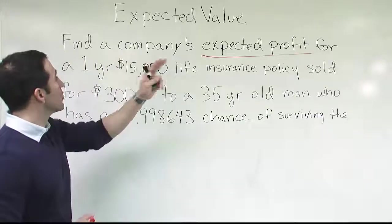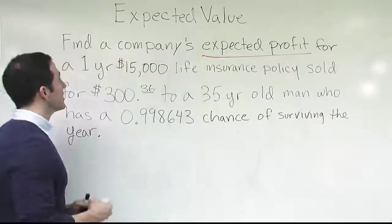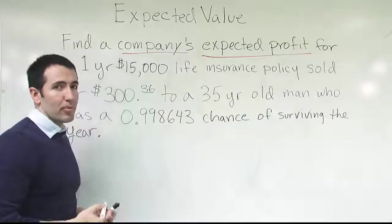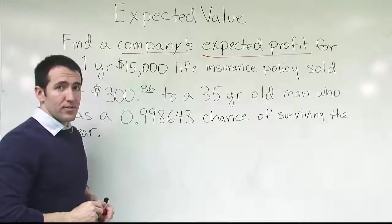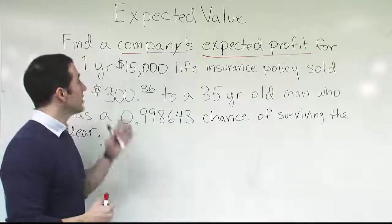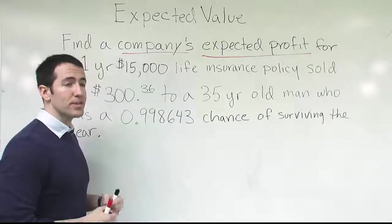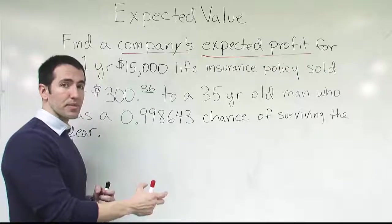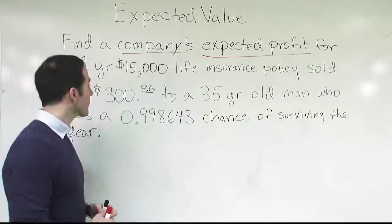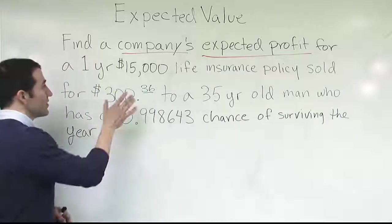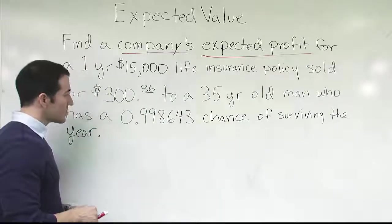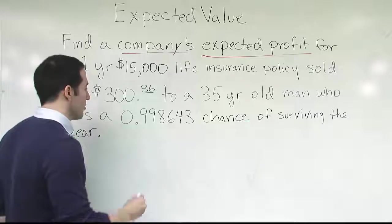So find a company's expected profit. We want to pay attention to the fact that they say the company's — there's always going to be a point of view on the problem. Sometimes it doesn't matter, but here we're going from the company's point of view. So we're going to make sure we're aware of what represents a loss for them and what represents a profit for them. We have dollar amounts and probabilities, so what we're going to do to solve this is put it into a table format.